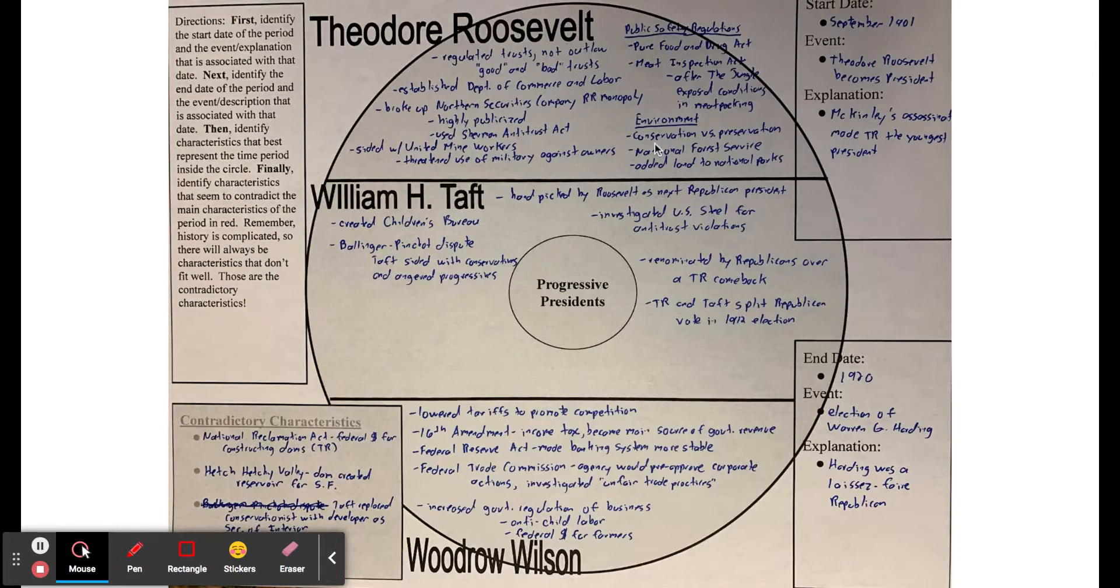When he left office, he had picked his successor. He basically told Republicans, I want you to choose William H. Taft as my successor. There's this idea that Roosevelt believed that Taft would continue what Roosevelt called his policies, so he hand-picked Taft. But Taft disappointed Roosevelt, and that's going to result in a split between the two of them later on.